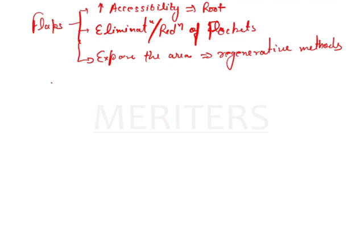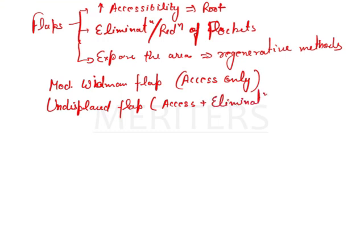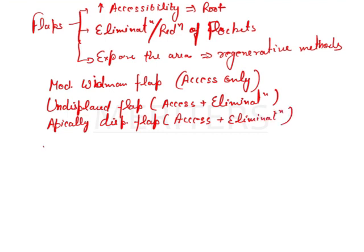The main flaps used are the modified Widman flap, the undisplaced flap, and the apically displaced flap. The modified Widman flap is used only for gaining access — it has nothing to do with elimination of pockets. The undisplaced flap is used for both gaining access and elimination of pockets, and the apically displaced flap is also used for gaining access as well as elimination of pockets.